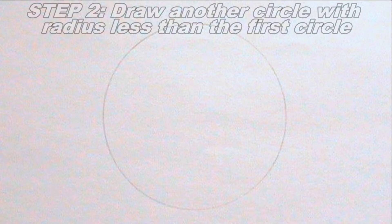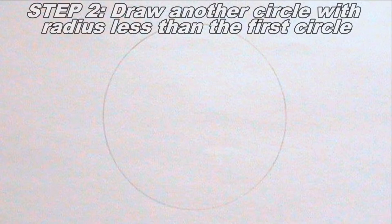Next I will draw another circle. The radius of this circle should be less than the radius of the first circle I drew.